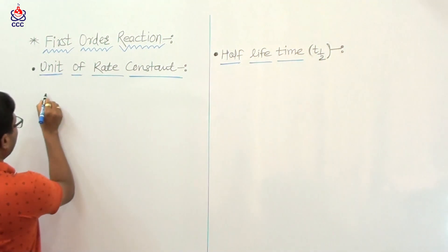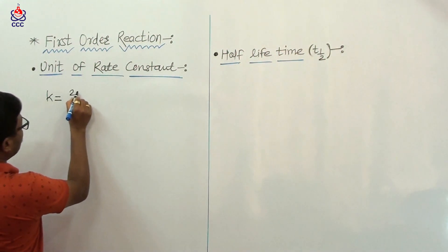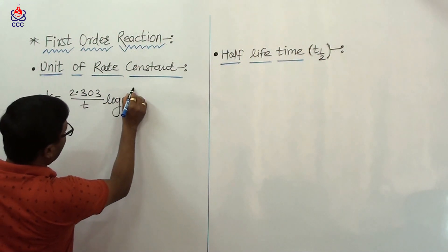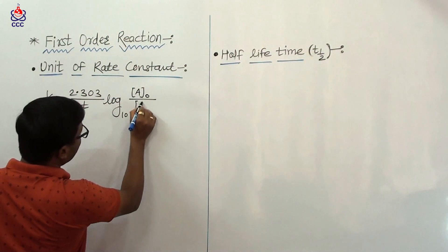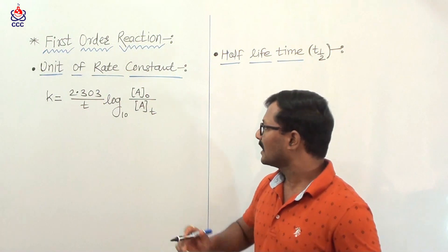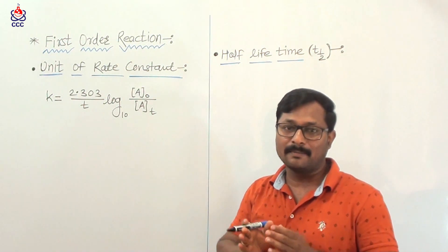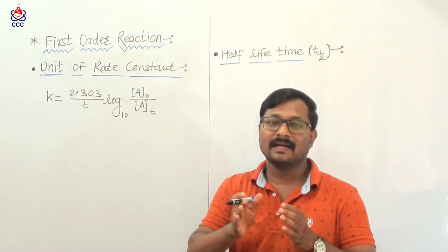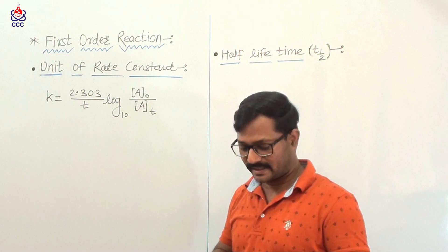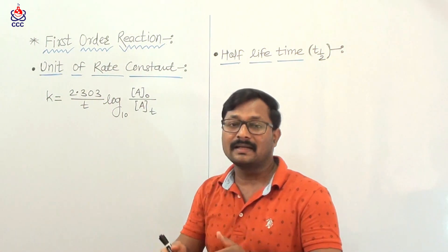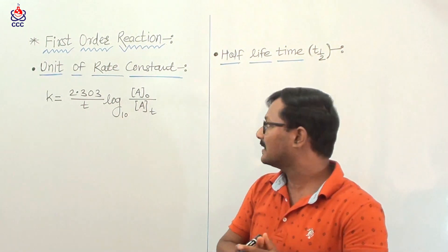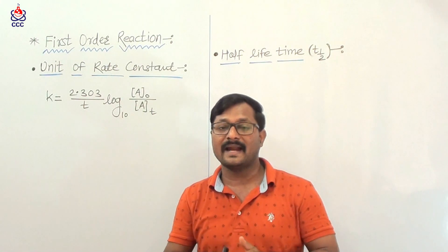The rate constant k for a first order reaction is equal to 2.303 upon t, multiplied by log to the base 10 of A0 upon At. Here k is the rate constant, t is the time required for the corresponding change in the reaction, A0 is the initial concentration of the reactant, and At is the concentration of the reactant at time t.